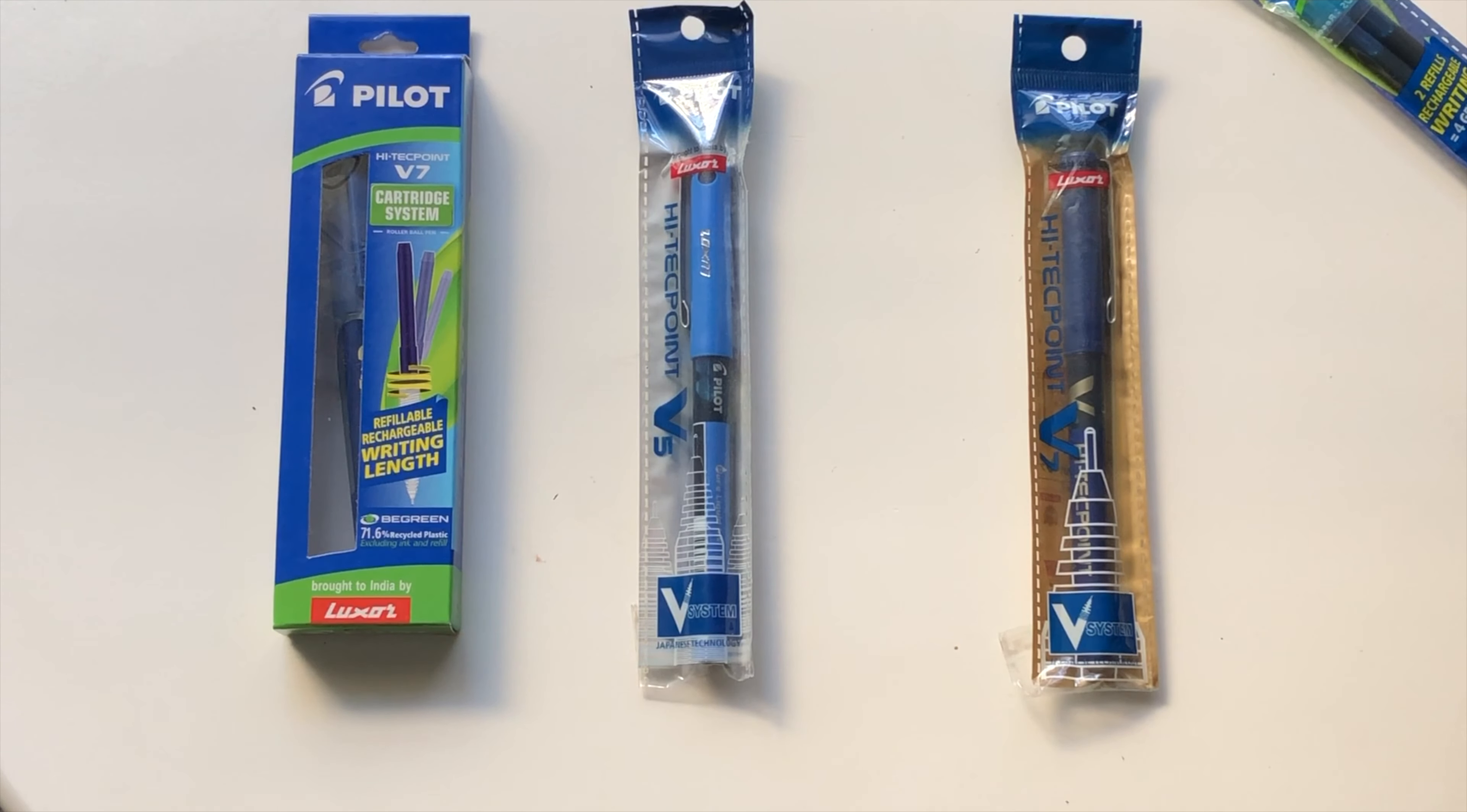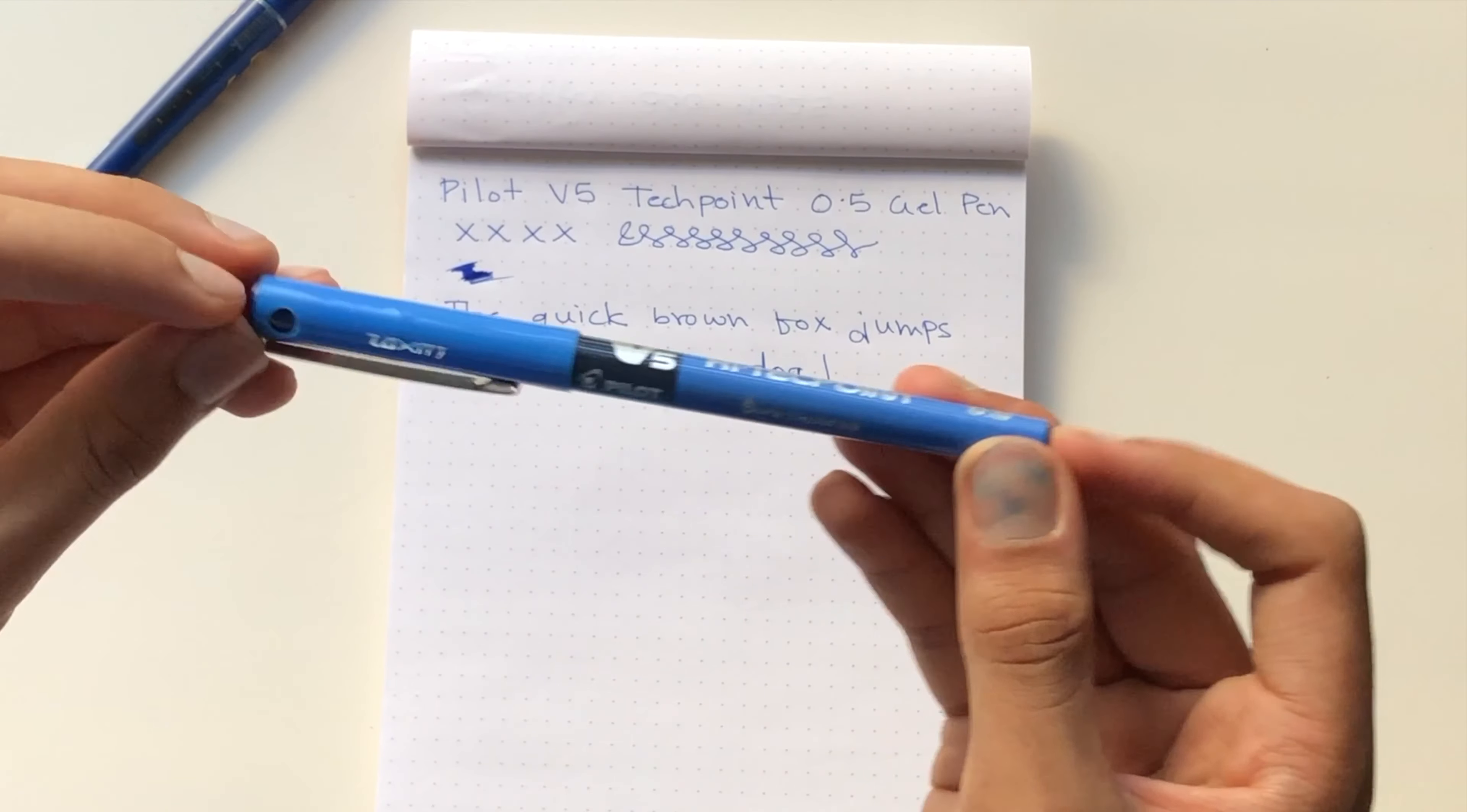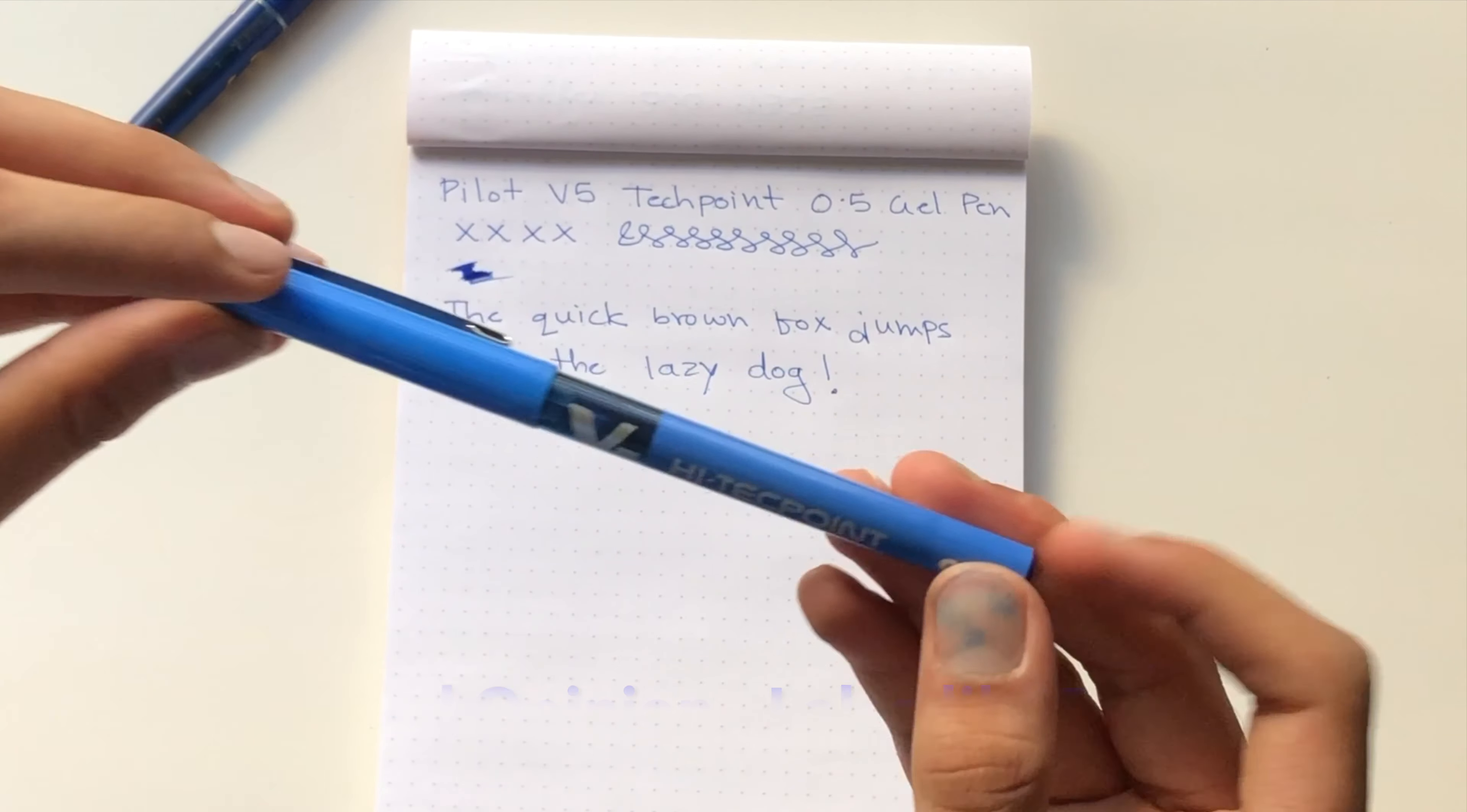It definitely has some good feedback in terms of the complete writing experience, and it has that typical blue shade. Let's write the tagline, The Fountain Pen Enthusiast. It's definitely good in terms of writing experience. It's a little fine, and the ink quality is pretty decent. I found this to be better than the Reynolds Trimax. I've used this pen before, and I think this is better compared to Trimax. Let's move on with the V7 High Tech Point.